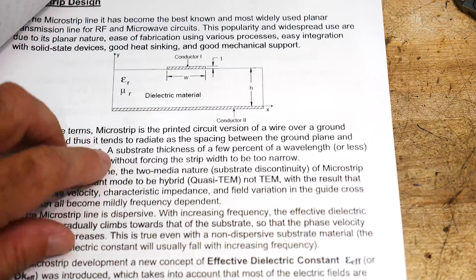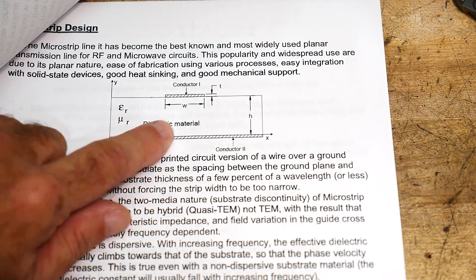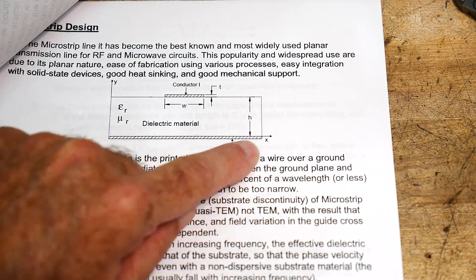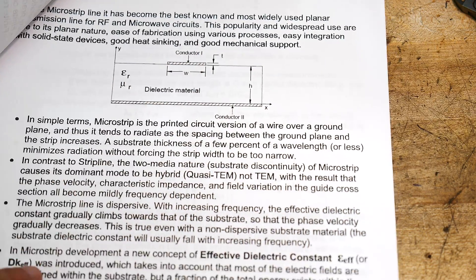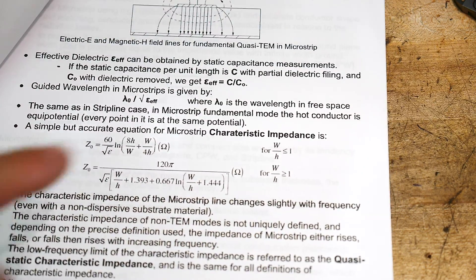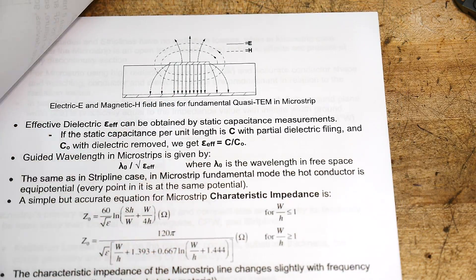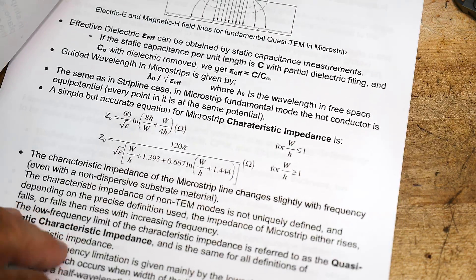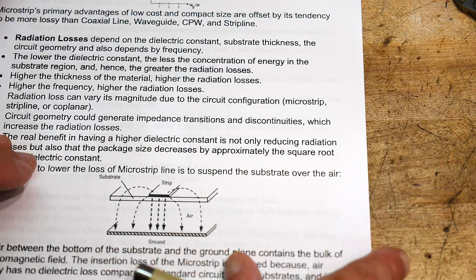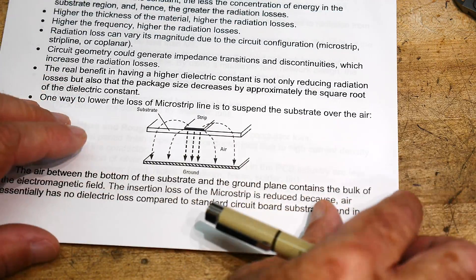Here's the Microstrip that I'm interested in. It's the easy one to do. There's just one big bottom conductor and then a trace on top. And this is what the E and M wave would look like.